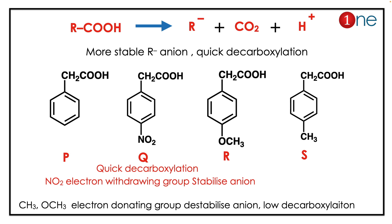NO₂ is an electron withdrawing group, which stabilizes the anion, so it goes faster. CH₃ and OCH₃ are electron donating groups, which destabilize the anion, so they will be slower. Therefore, Q (nitro-substituted) will have the highest decarboxylation rate.